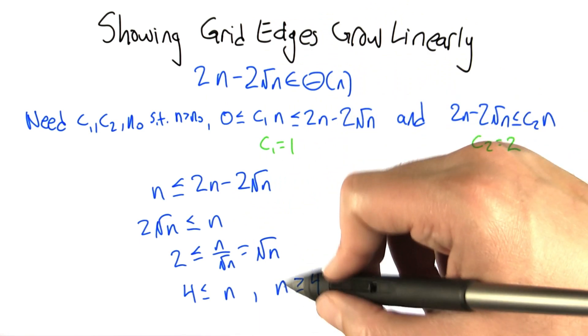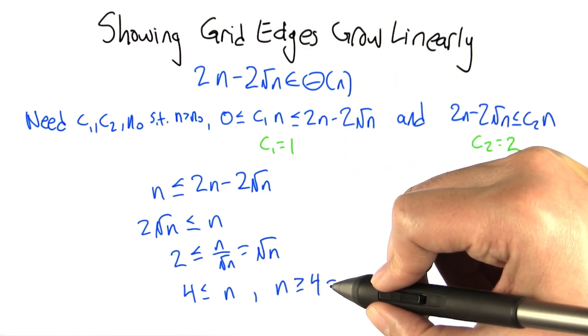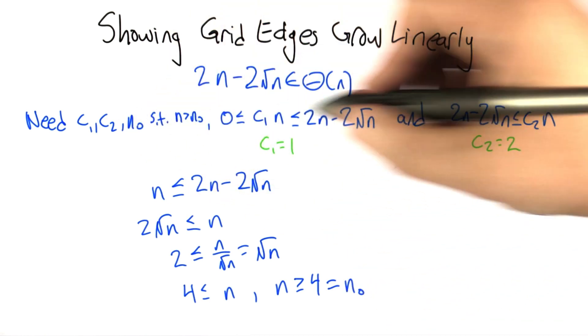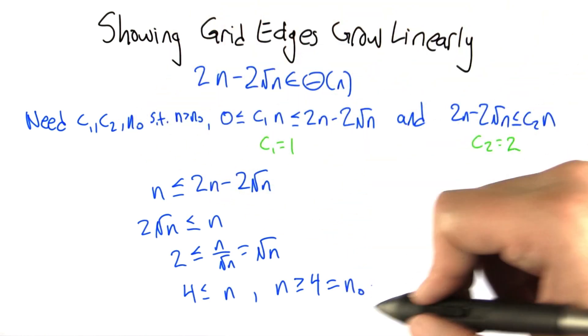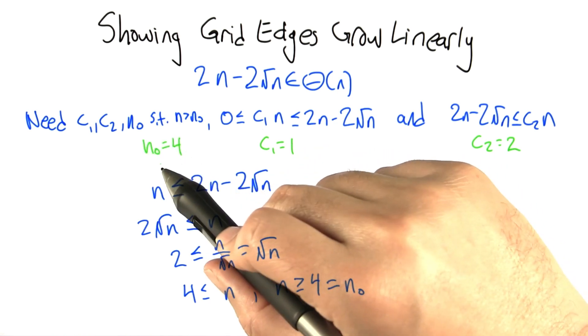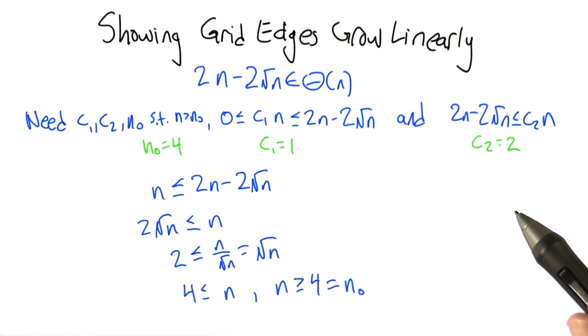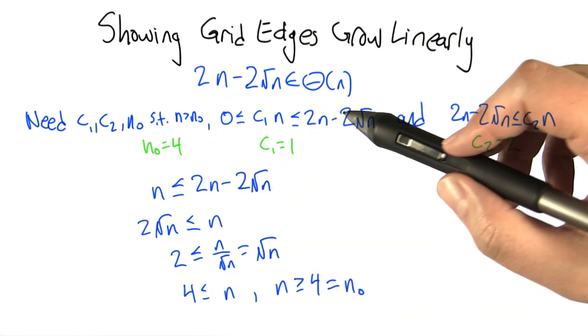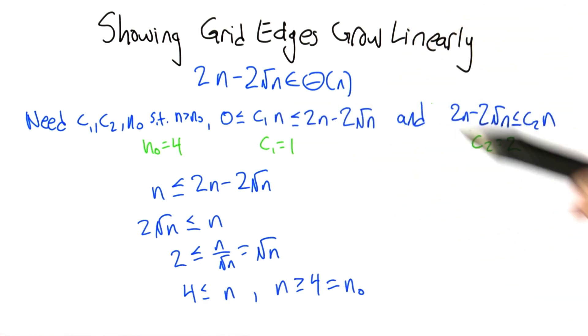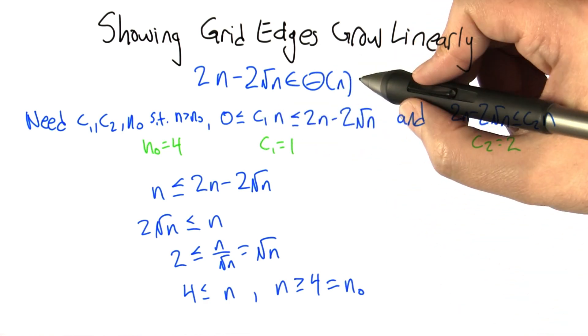That means we have to throw away the smaller values of n, and we can do that very simply by setting n0 to 4. Because this only has to hold for n that are bigger than n0, and that's what we've got there. So there we have it. If we set the constants this way, n0, c1, and c2, then what we find is that for big enough n, this more complicated expression is sandwiched between 2 simple linear functions.